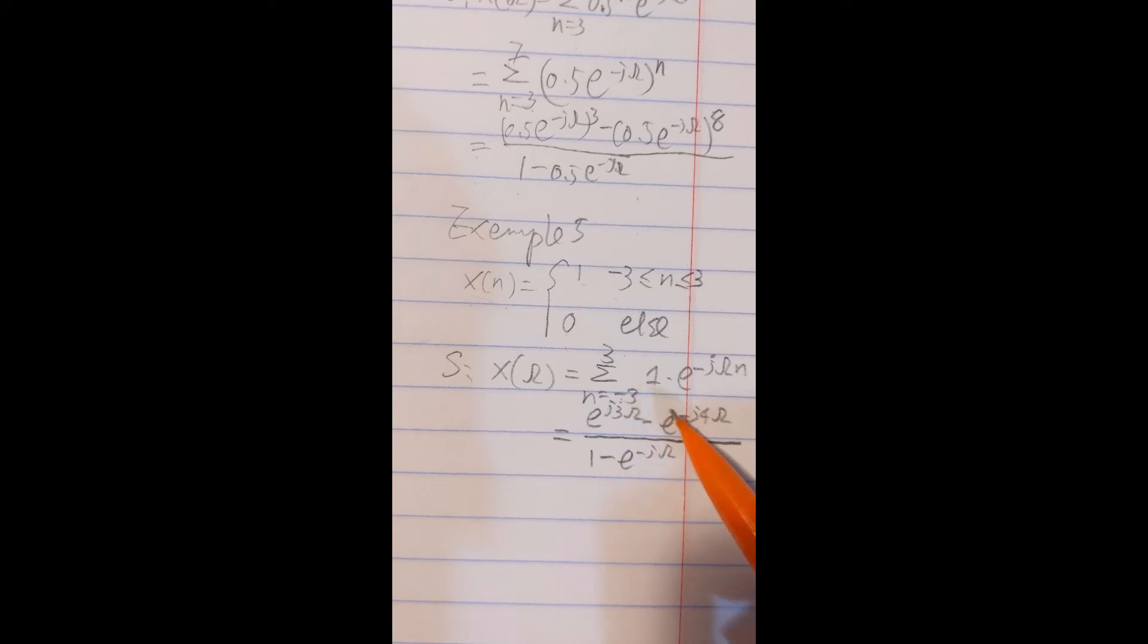And this is the last, this is the last one plus one. So e to minus j4 omega. Four is three plus one.